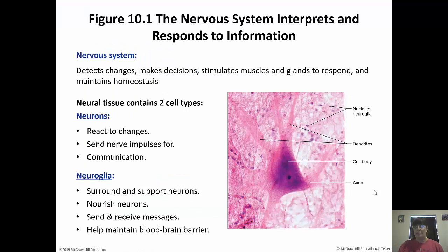First off, the job of the nervous system. The point is for it to respond to stimuli. Without the ability to respond to stimuli and changes in our environment, we're going to die. So the nervous system gathers that information, decides what to do about it, interprets the information, and then issues a response. The whole goal is to maintain homeostasis — that happy, steady state our body needs to be in.